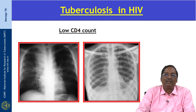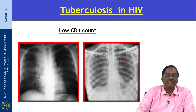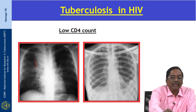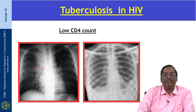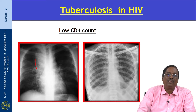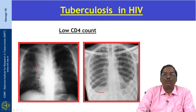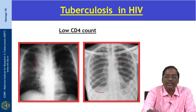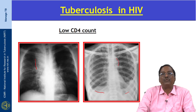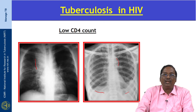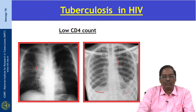Here is tuberculosis in HIV where the CD4 count is very low. This x-ray shows right paratracheal adenopathy, similar to primary tuberculosis. There is bilateral pulmonary effusion and also adenopathy, typical of the radiological features of HIV-TB in a low CD4 count.